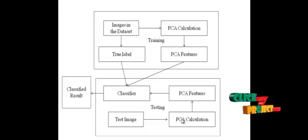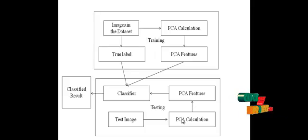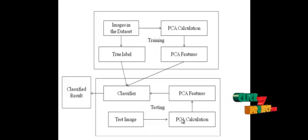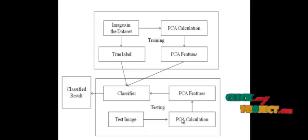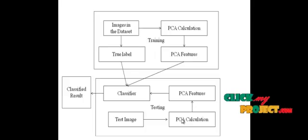Features are extracted from the test hyperspectral images. PC features are extracted from the images. Hyperspectral images contain several bands; for each band, the eigenvalue and eigenvector of the images were calculated. The calculated values of each band were arranged and stored as features. Features are extracted for both the test images and all images in the database, and the extracted features were stored.